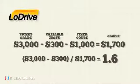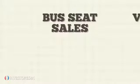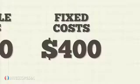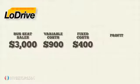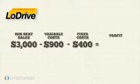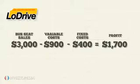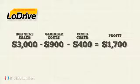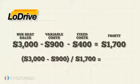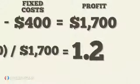Hi-Fly's competitor Low Drive also earns bus seat sales of $3,000. Its variable and fixed costs are $900 and $400 respectively, for a profit of $3,000 minus $900 minus $400, which equals $1,700. Low Drive's DOL is $3,000 minus $900 divided by $1,700, which equals 1.2.